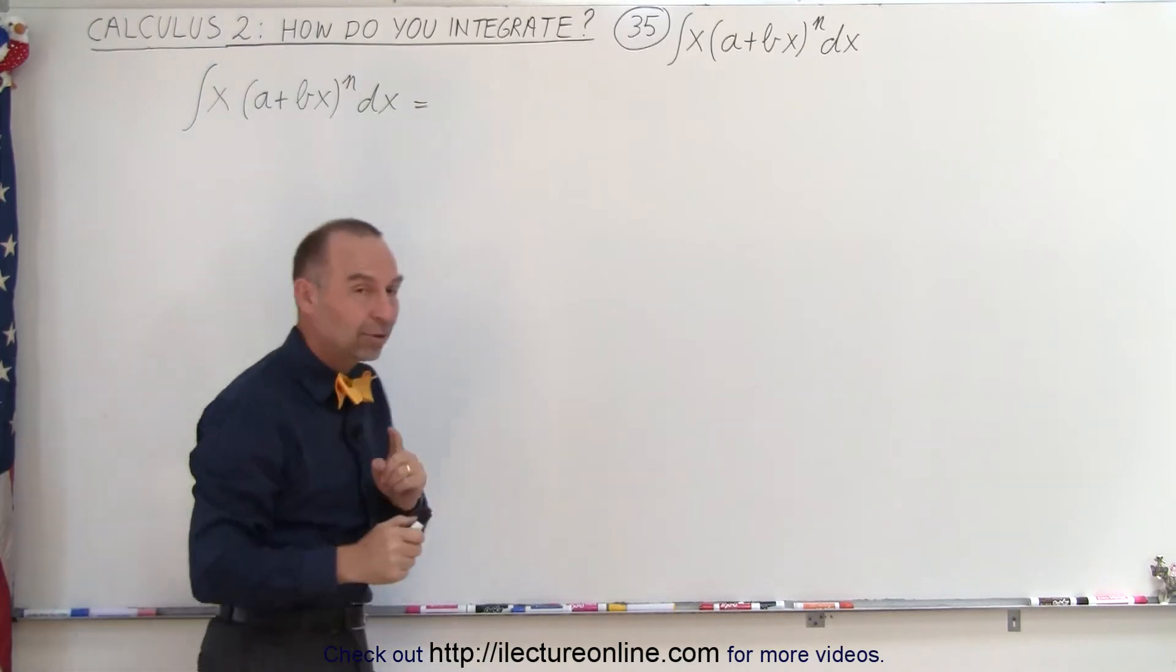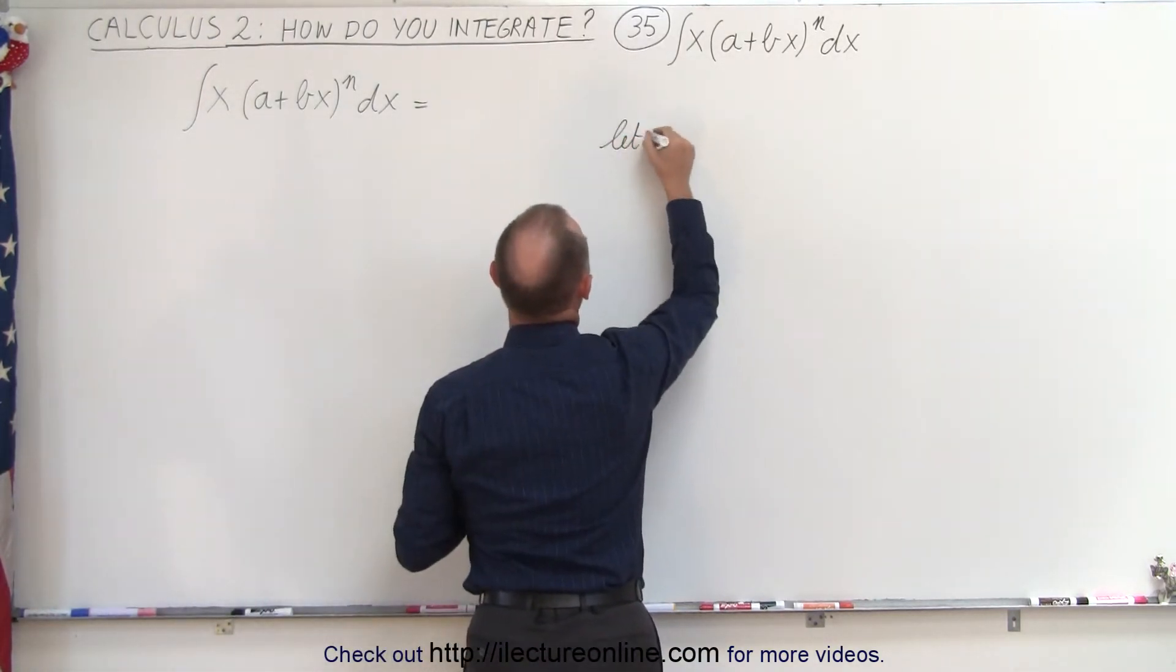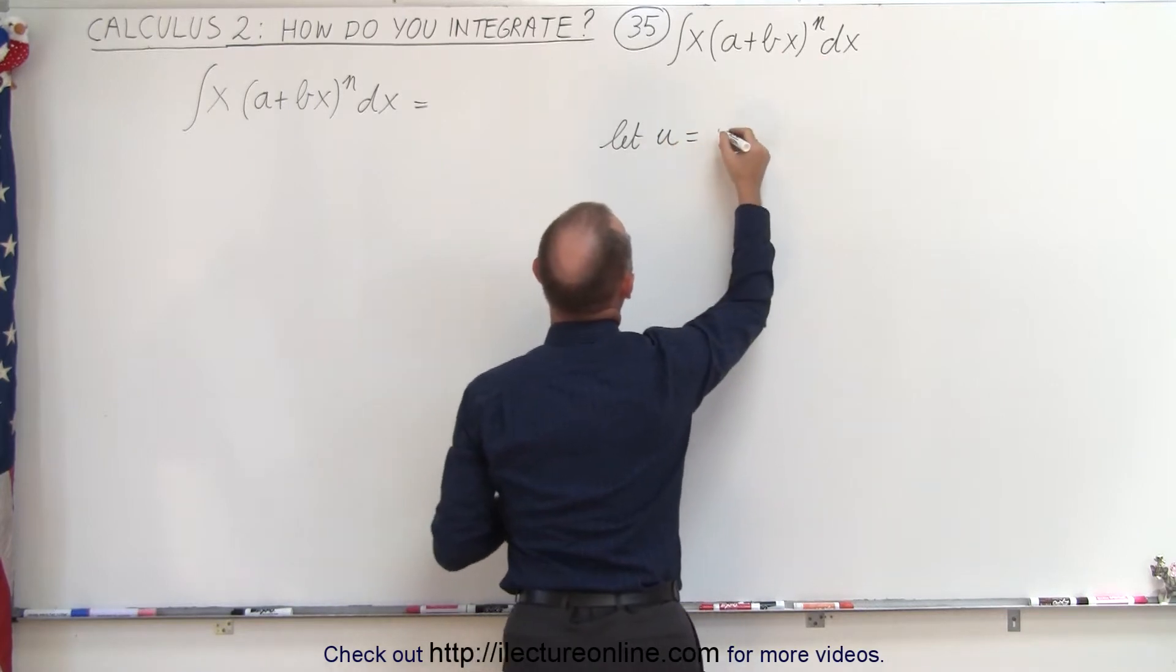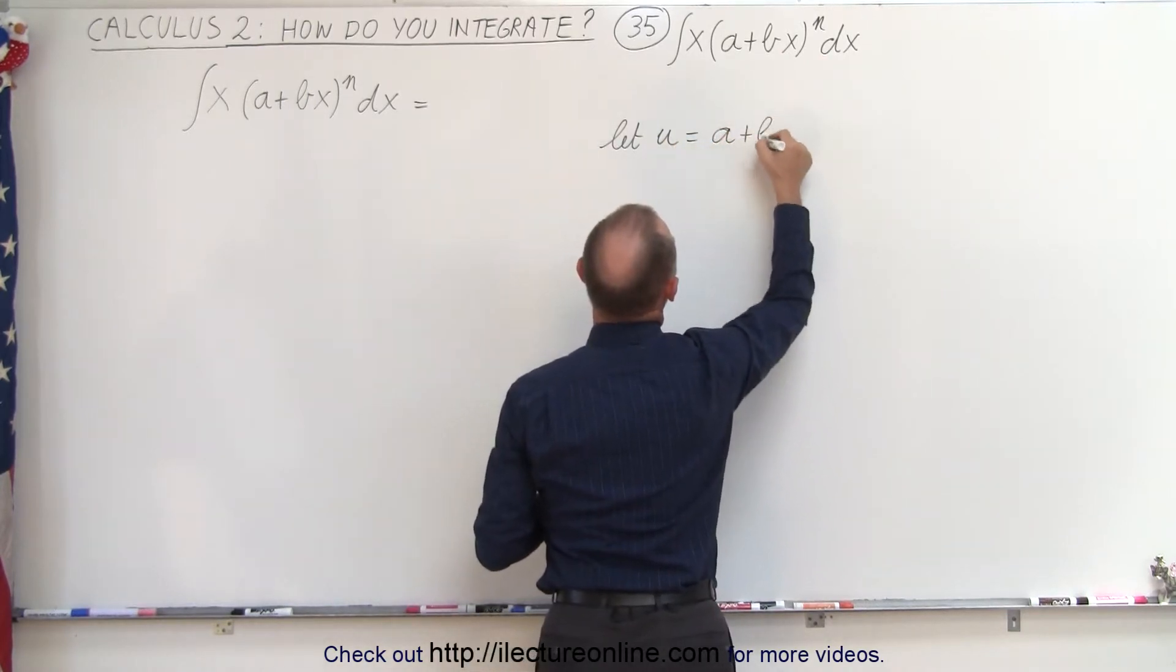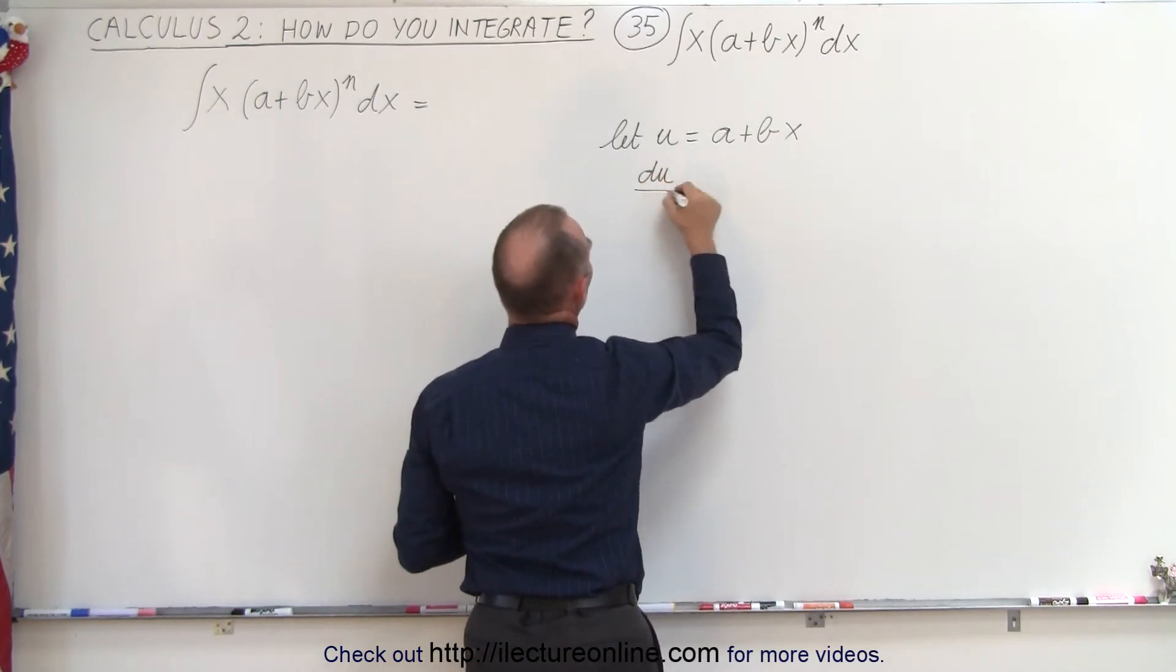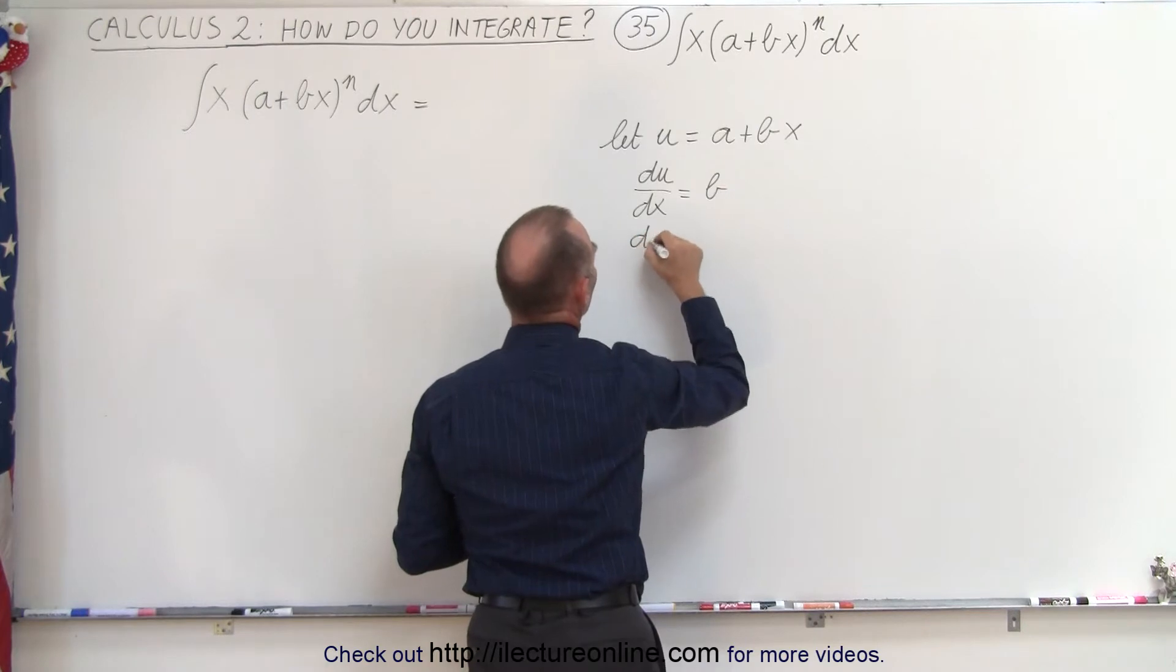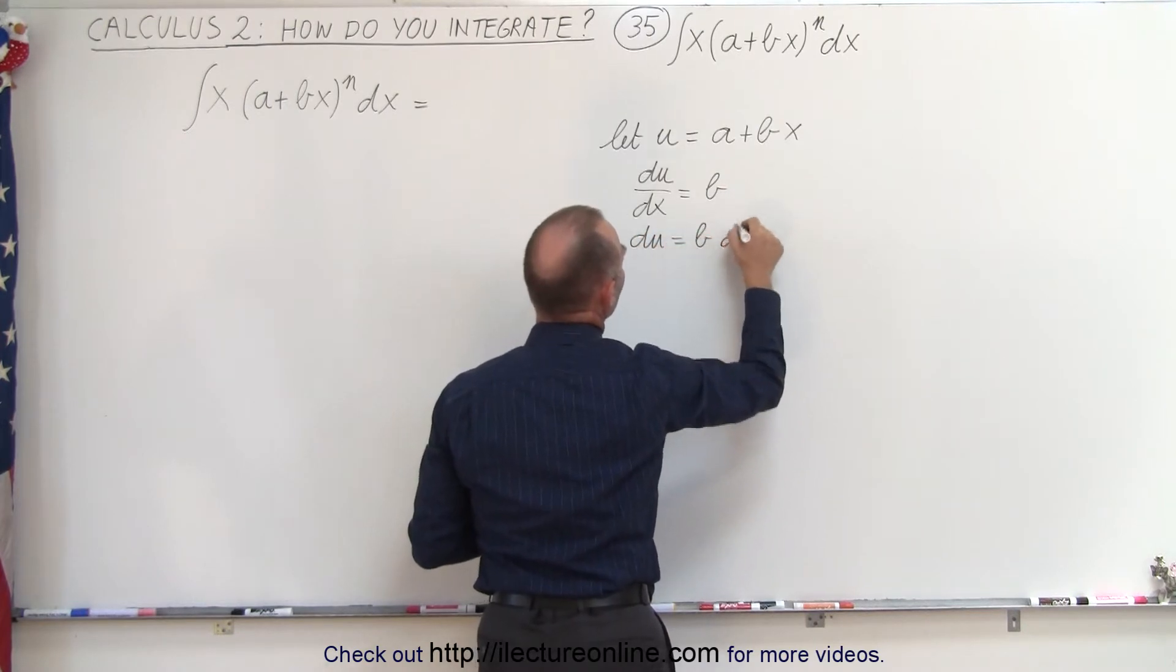Let's try that same substitution we did last time. We're going to let u equal what's inside the parentheses, which is a + bx. Then we can see that du/dx is equal to b. Therefore, du equals b times dx, and dx equals du divided by b.